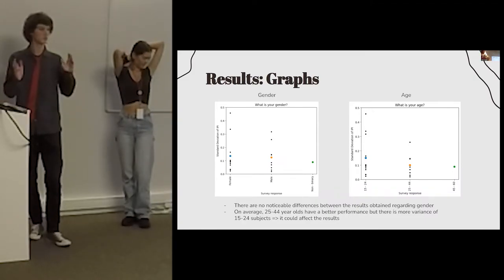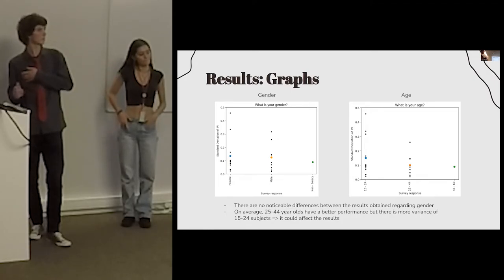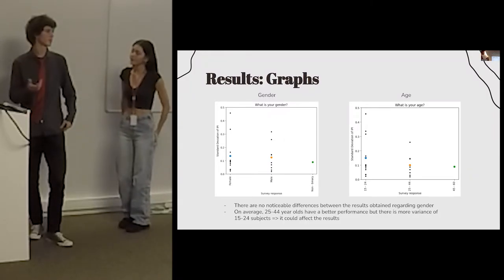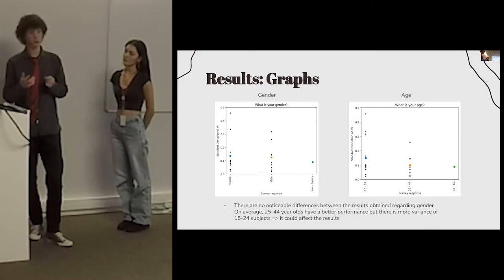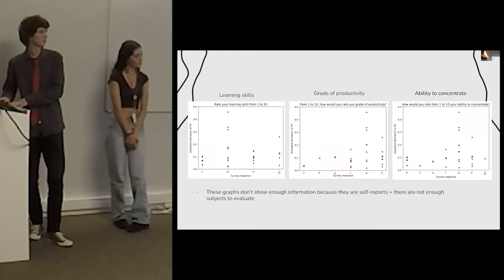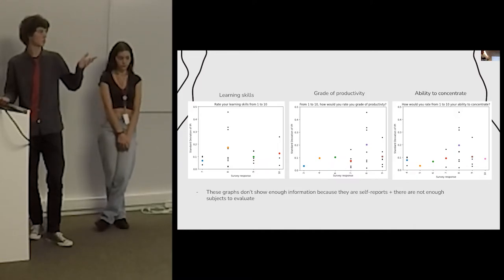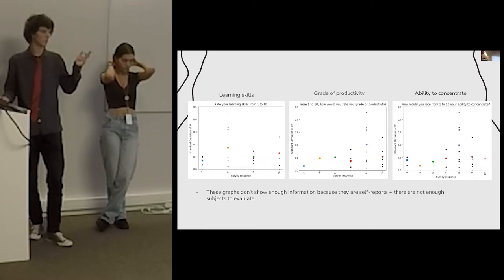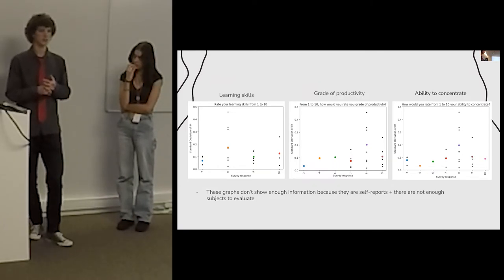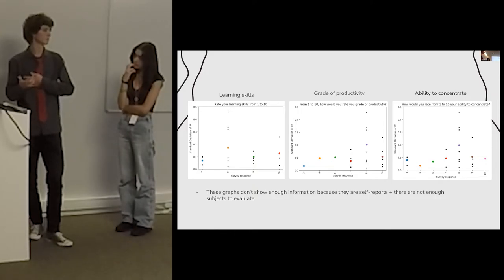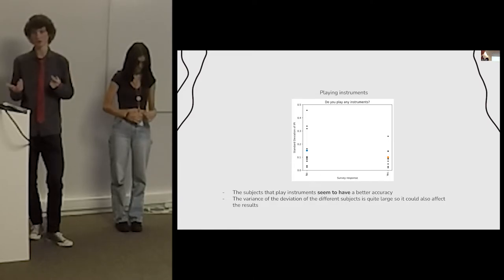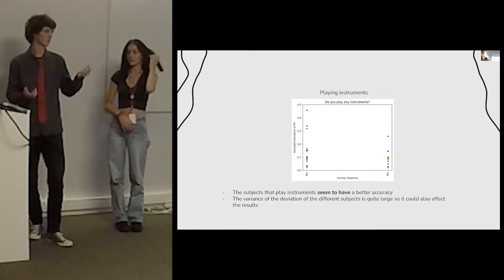There was no noticeable difference between genders. For age, people between 25 and 44 years old had better performance on average, but there was more variance in the 15 to 24 age group, which could affect our results. The factors of learning skills, productivity, and ability to concentrate were mostly self-evaluated on a scale of 1 to 10, so we didn't take these too seriously in our analysis. The most significant finding was whether the person played instruments — people who played instruments consistently had better results than those who did not.